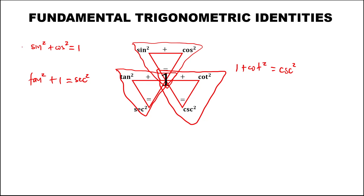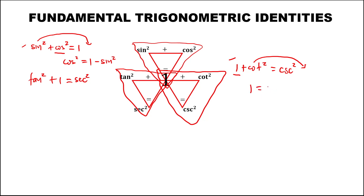From these identities, if we want to solve for cosine squared, we transpose sine squared to the other side. Similarly, 1 equals cosecant squared minus cotangent squared. This is how to use this figure for the different identities.